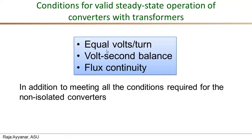The first requirement is the concept of equal volts per turn. The second is the volt second balance for the transformer windings — so in addition to the inductors, the transformers should also meet the volt second balance. These two requirements will be covered in this video, and the third requirement on flux continuity will be taken up in the next video.